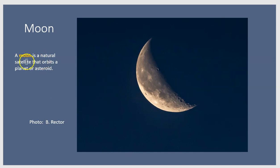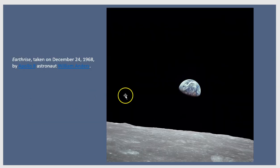A moon is a natural satellite that orbits a planet or asteroid. And here's our moon. Of course, a very famous picture was taken from the moon of Earth. This was taken in 1968.